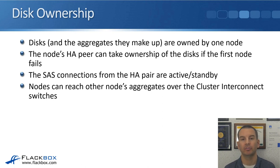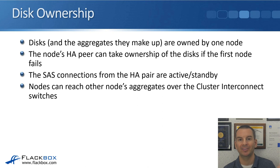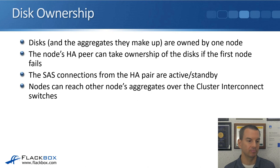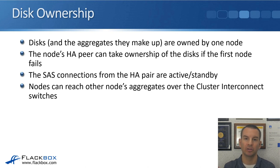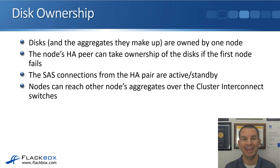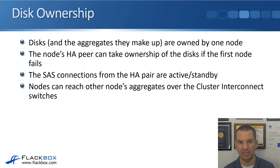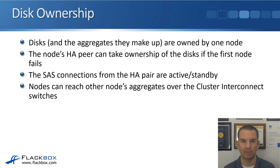Nodes can, however, reach other nodes' aggregates over the cluster interconnect switches. So the incoming client connections don't always have to hit the node that owns the disks. For example, let's say we've got an aggregate made up of disks owned by controller 1. The incoming client connections do not have to terminate on controller 1 to get access to that data — they can hit any node on the cluster and still reach that data over the cluster interconnect onto node 1 and then through its SAS connections down to the disks.